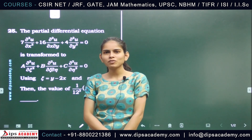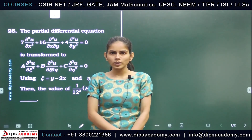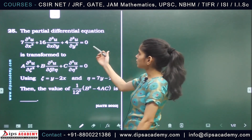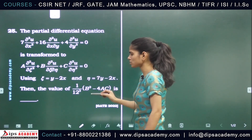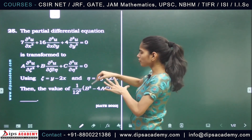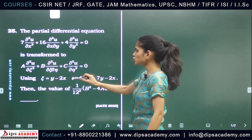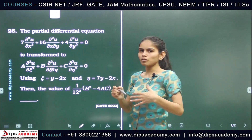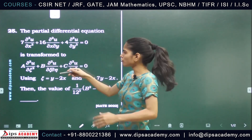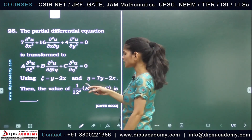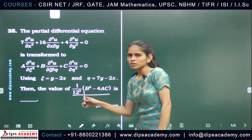Hi everyone, we are back with a new question from GATE 2022, from the subject Partial Differential Equations. The question asks: the given PDE is transformed to a canonical form using certain transformations. We need to find the canonical form, identify the coefficients A, B, C (as double-derivative constants), and then find the value of the expression (1/12³)(B² - 4AC). This is a numerical answer type question.